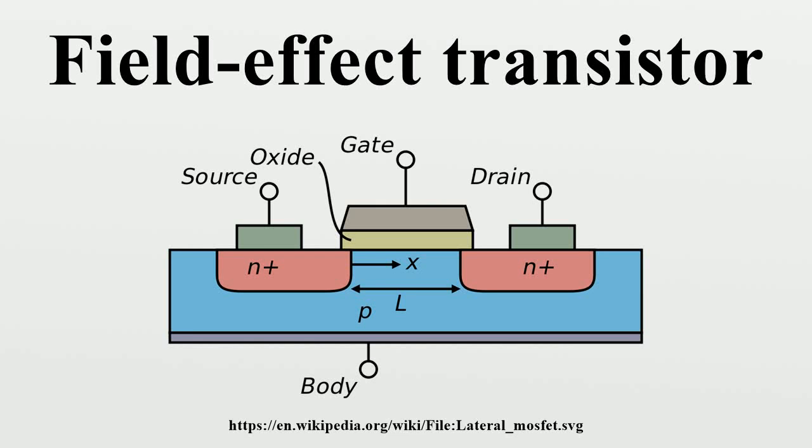The field effect transistor is a transistor that uses an electric field to control the shape and hence the electrical conductivity of a channel of one type of charge carrier in a semiconductor material. FETs are also known as unipolar transistors as they involve single carrier type operation.